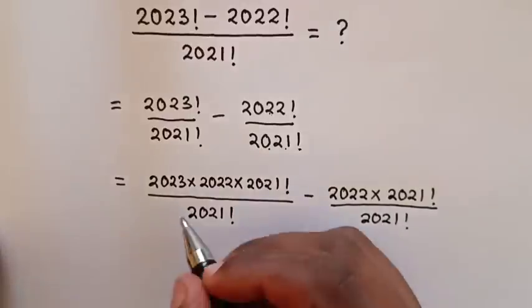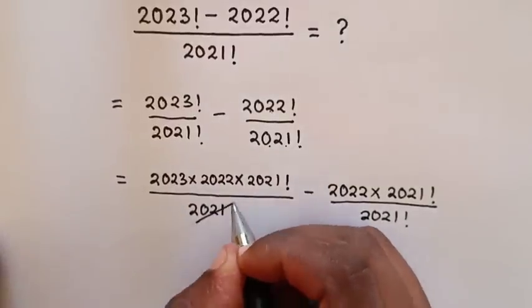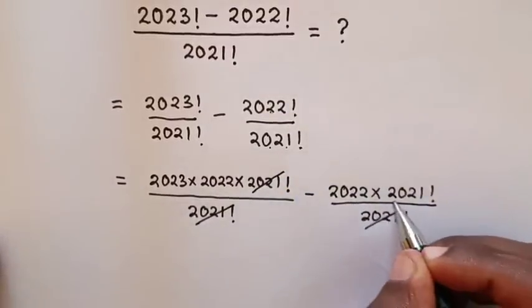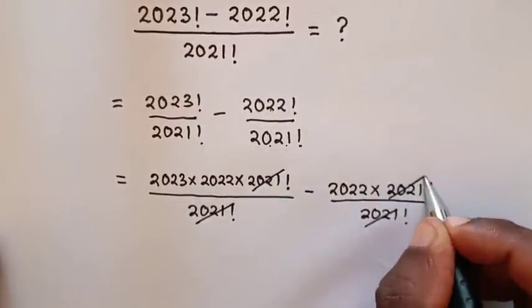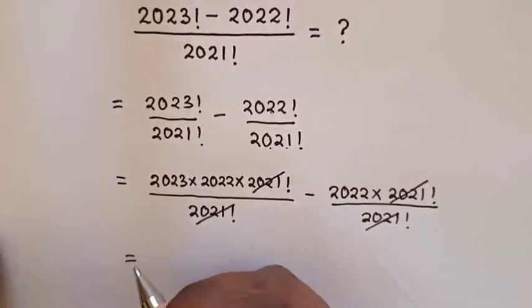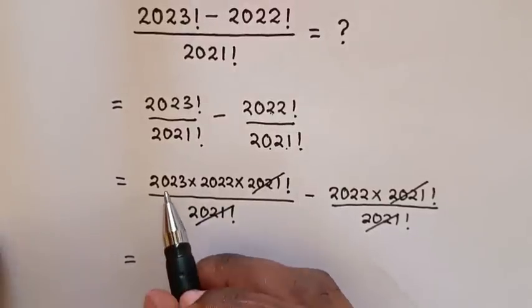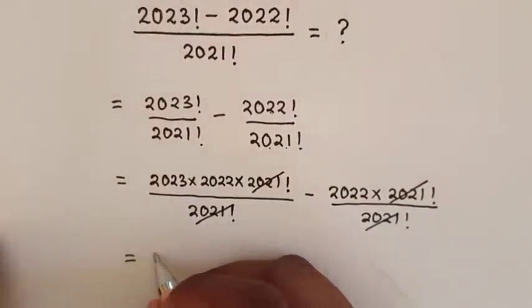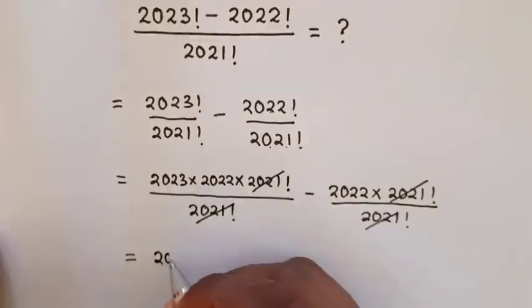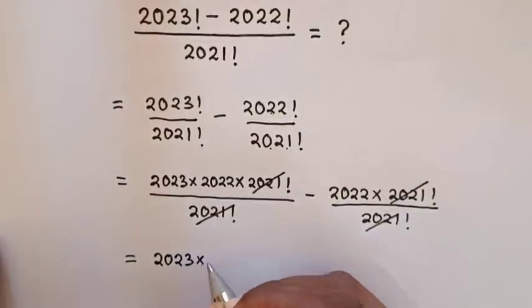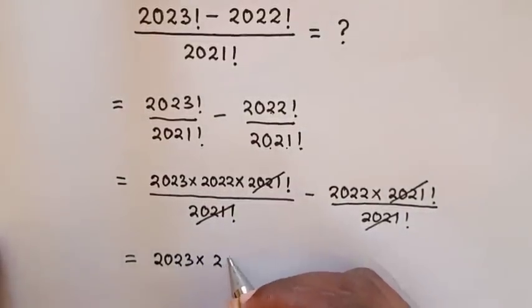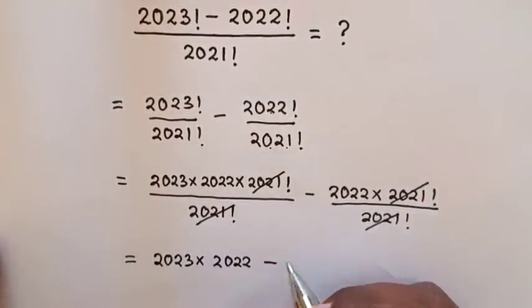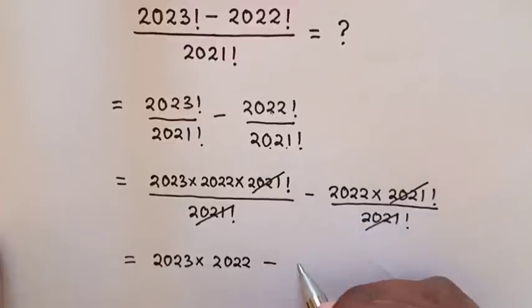Then, to simplify here, the 2021 factorial will cancel with 2021 factorial in both terms. So it will be equal to 2023 times 2022 minus 2022.